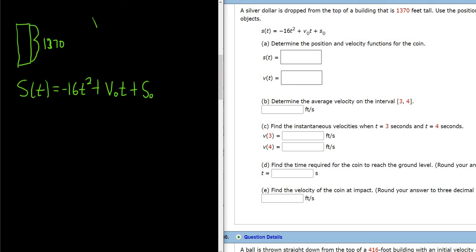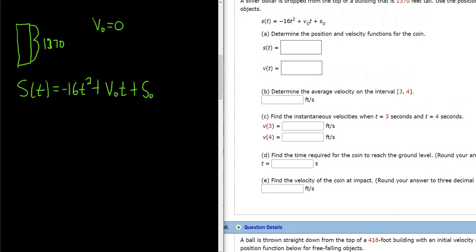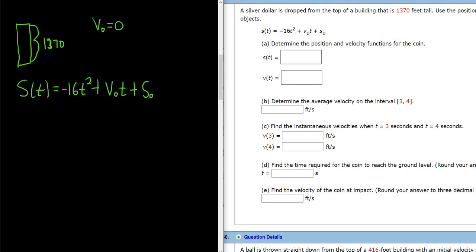So v naught is the initial velocity. So because the coin is dropped, it's going to be 0. If it was like thrown, it would have a number. For example, this next example here, you see the ball is thrown down. So you would have an actual number there instead of 0. All right, so s naught is the initial position. So the initial position is the top of the building, so that's 1,370.